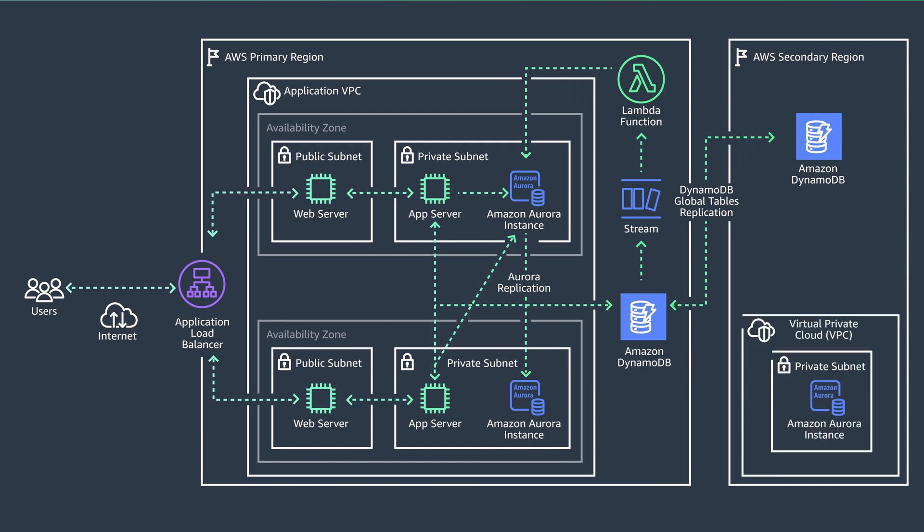A similar approach can be used for the relational database with Amazon Aurora global database, with the caveat that the replicas deployed by this service only support read capability. In this episode, we discussed how to modernize legacy applications using a hybrid database architecture that leverages DynamoDB and Aurora databases. Check out the links below for more details. Thanks for watching Back to Basics — see you next time.